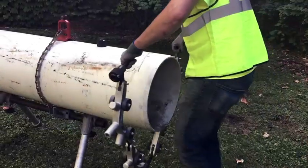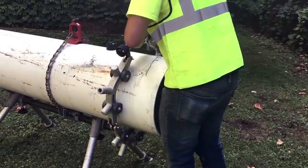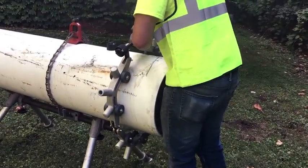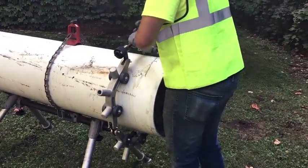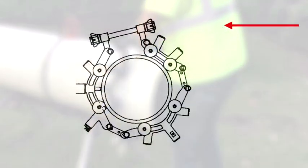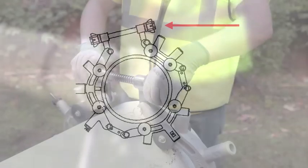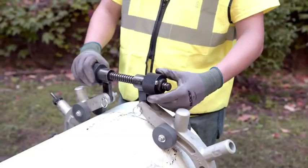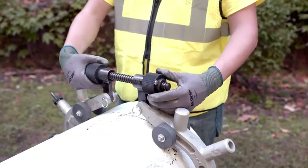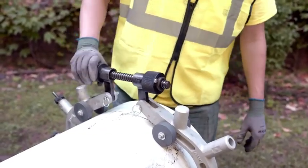Place the cutter around the pipe. Using the connecting feed screw, insert it through the pivot hole on the opposite side to connect the cutter. Thread the tightening nut onto the feed screw and tighten.